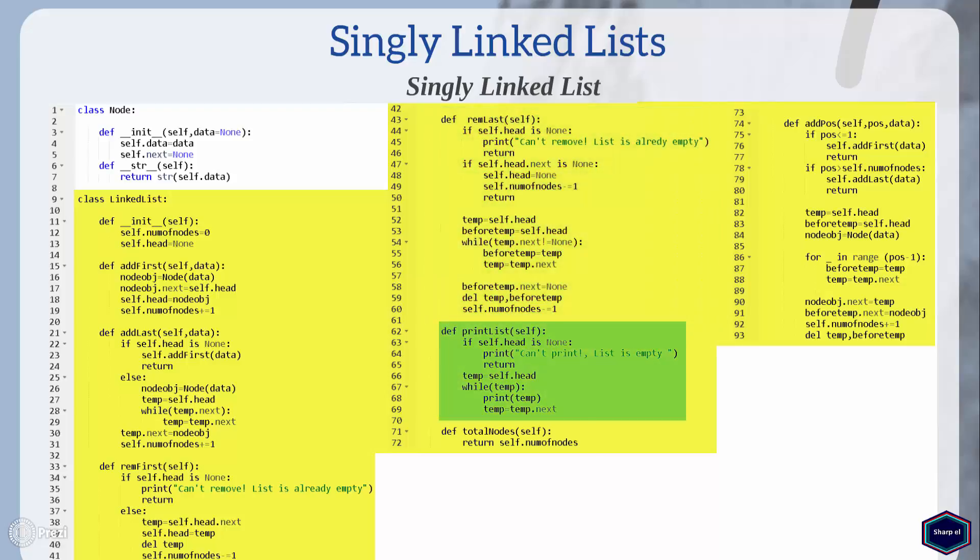The print_list method prints all the elements in the list. If the list is empty it prints a string indicating that the list is empty. If the list is not empty, I look for the last node in the list — that is, the node whose next value equals none — and I print each node which is not none.